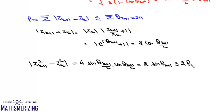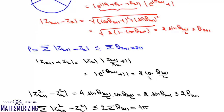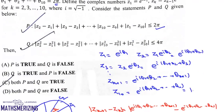Taking the summation, Σ|z_{k+1}² - z_k²| ≤ 2·Σθ_{k+1} = 2·2π = 4π. So statement Q is also correct. Therefore, the correct option is C: both P and Q are true.